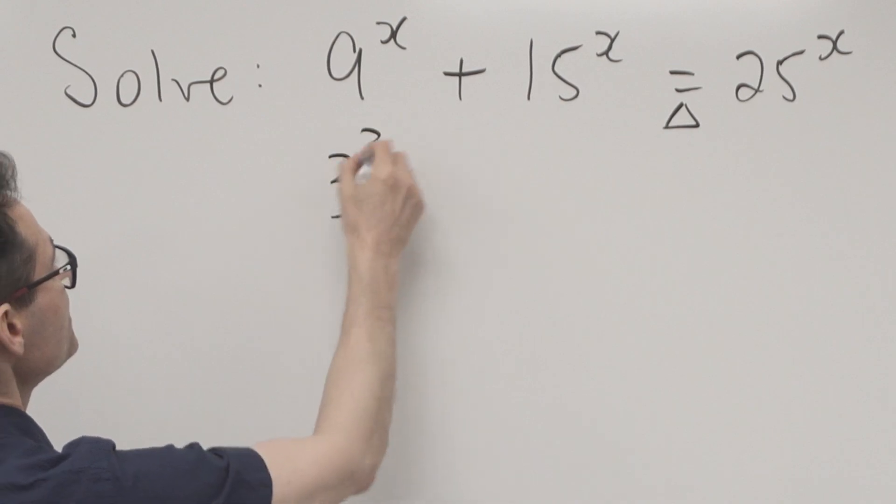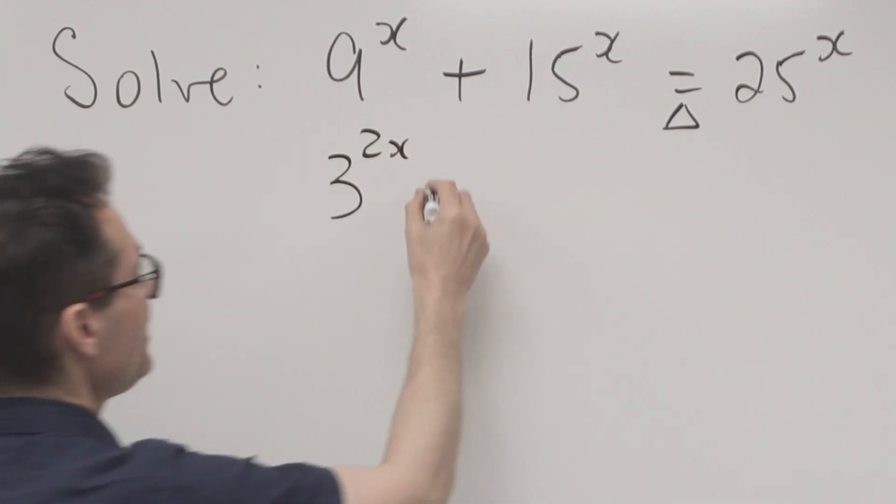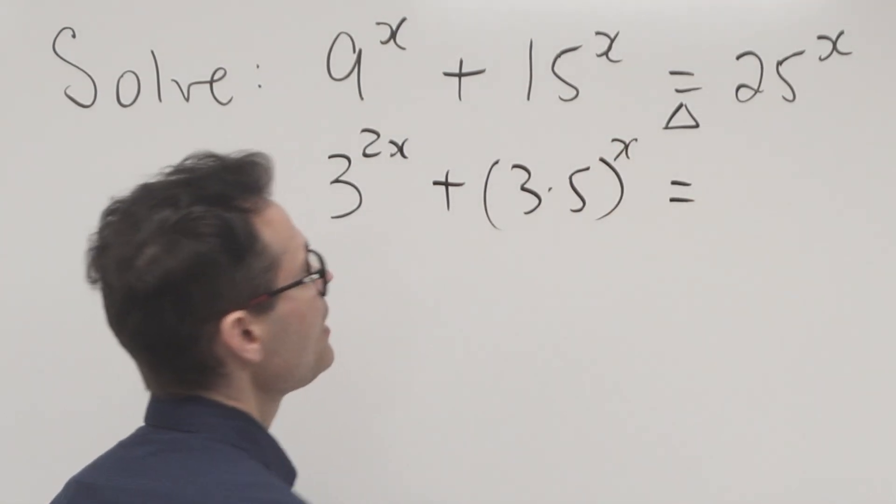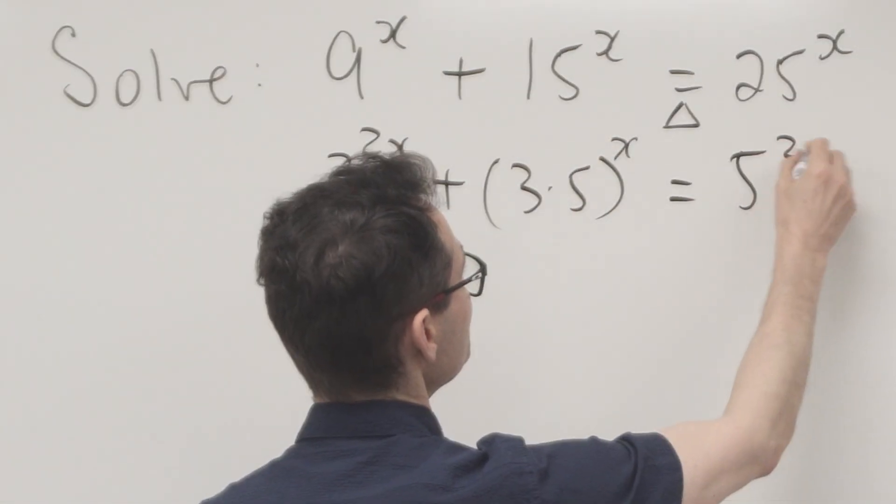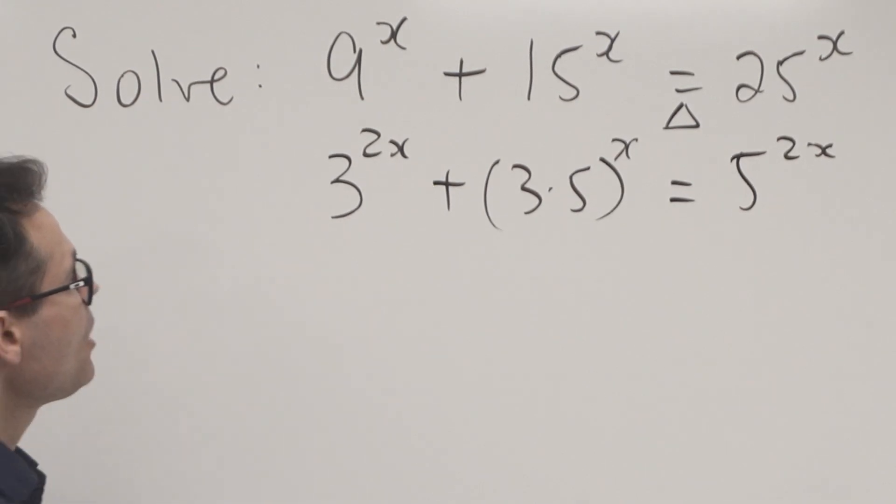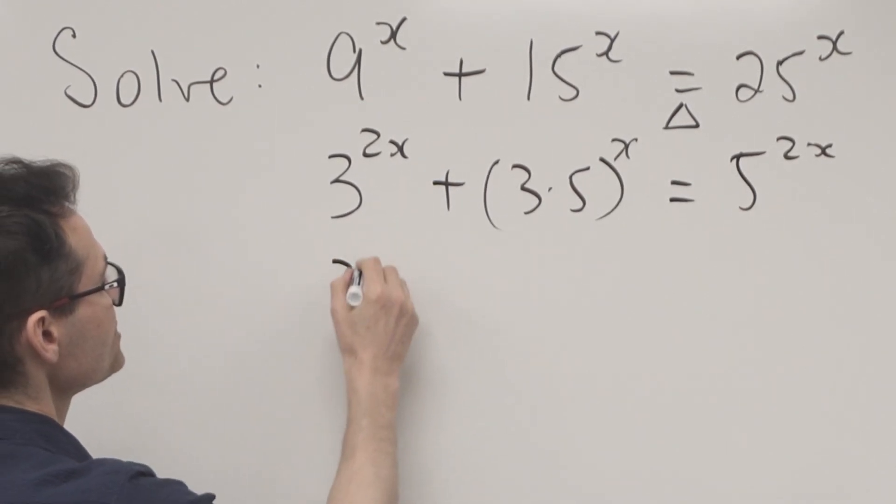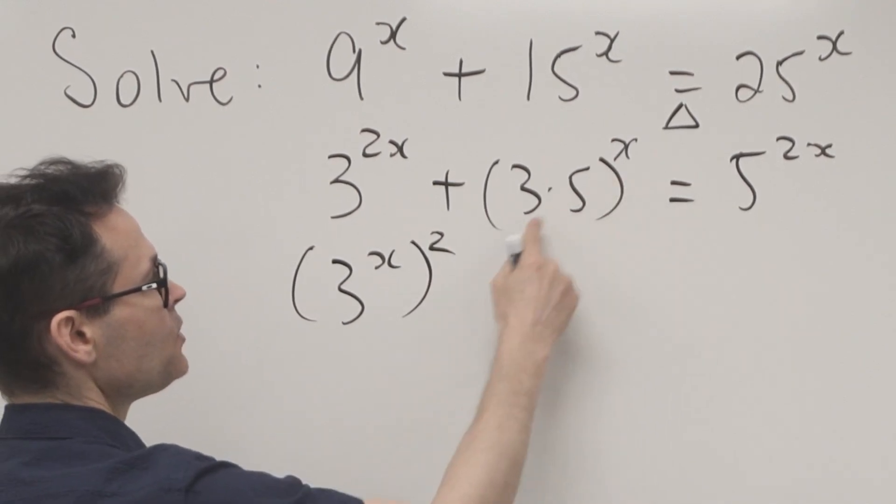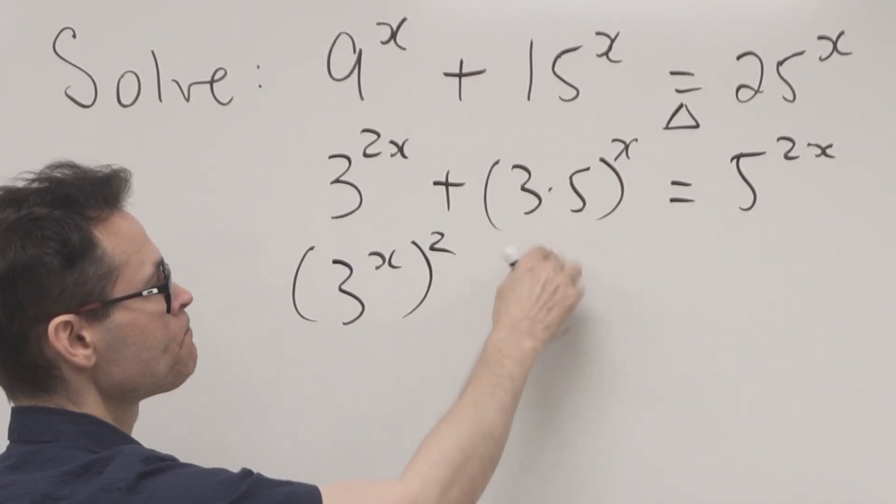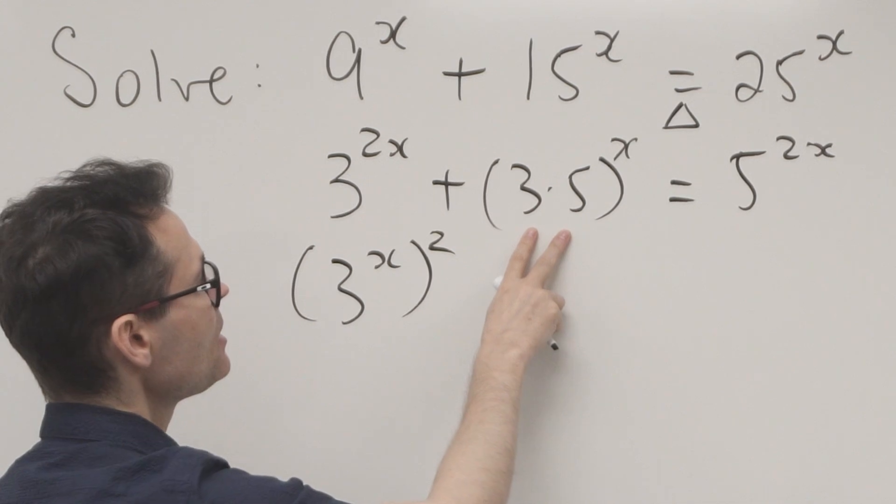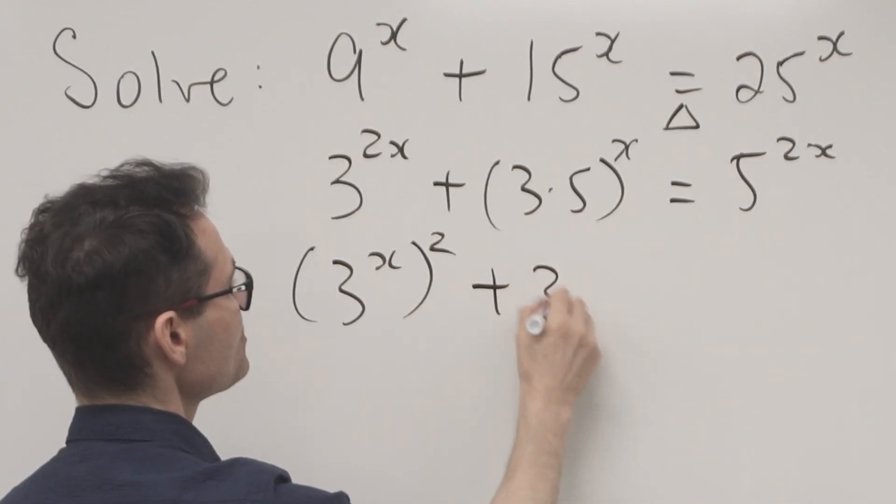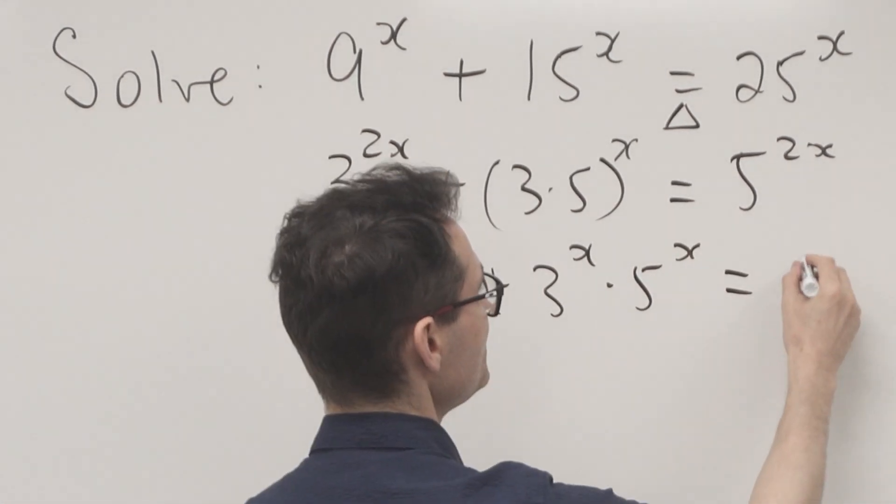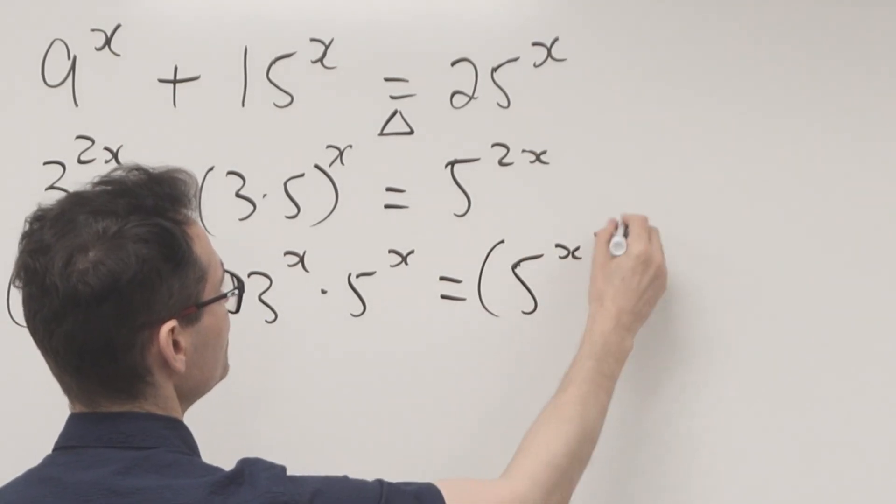That's 3^(2x), and this is 3×5^x, and this is 5^(2x) using basic exponent rules. I noticed that could be written as (3^x)². If you have two bases being multiplied, you can apply the exponent to each. So (3^x)×(5^x) equals (5^x)².